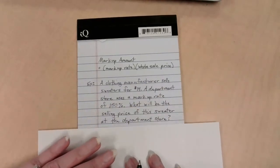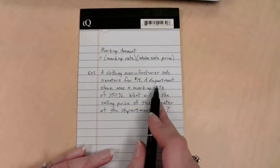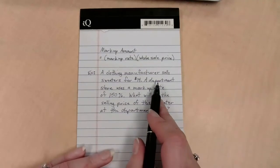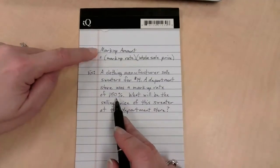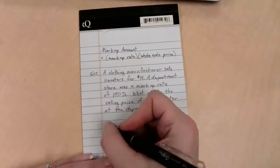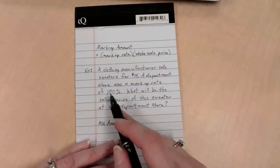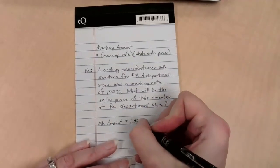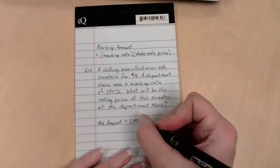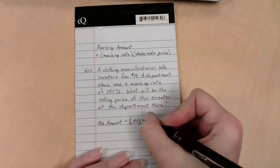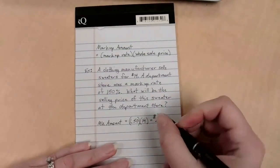We have a clothing manufacturer selling sweaters for $14. Department store picks these up, and they are going to mark them up so the department store can make money because they have employees to pay and they've got a building to pay for and everything else. And so, their markup rate is 150%. If I'd like to know the markup amount, I'm going to take my markup rate. This is 150 percent. That's 1.50 for multiplication purposes. Never use the percent form for calculation. Always use the decimal form for calculations. So, what is 150% of 14? Well, that's all of it plus half, so that's going to be 21.